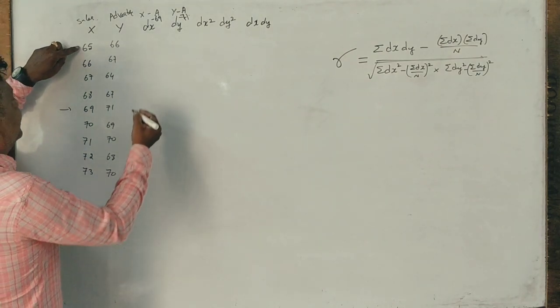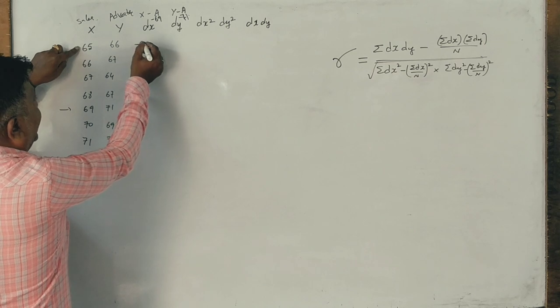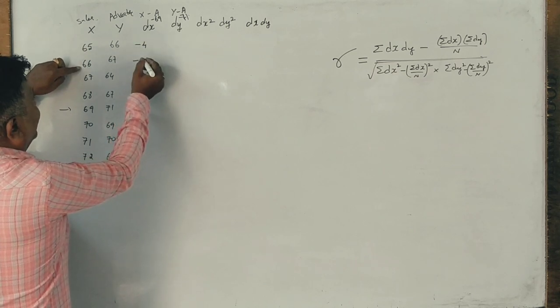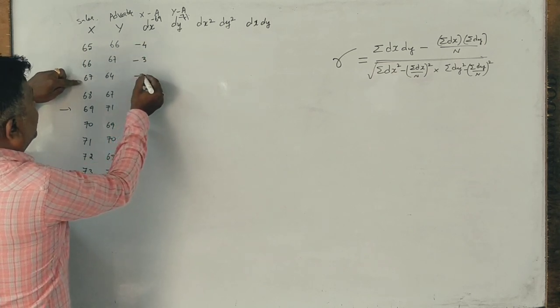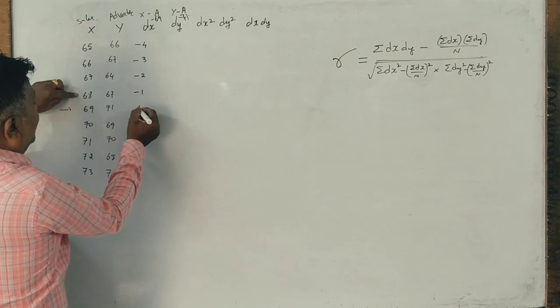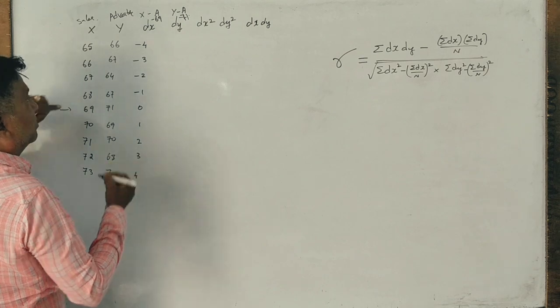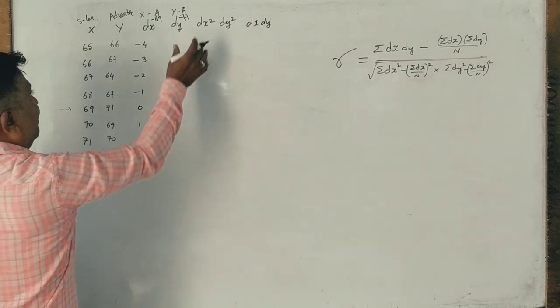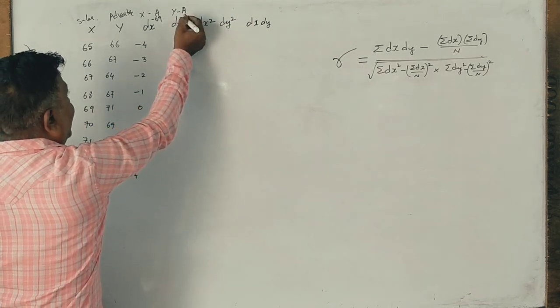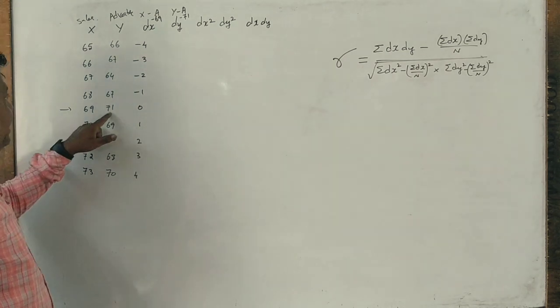65 minus 69 are minus 4, minus 3, minus 2, minus 1, 0, plus 1, plus 2, plus 3, plus 4. Correct? This is dx. How do I say? I assume that it is 71.